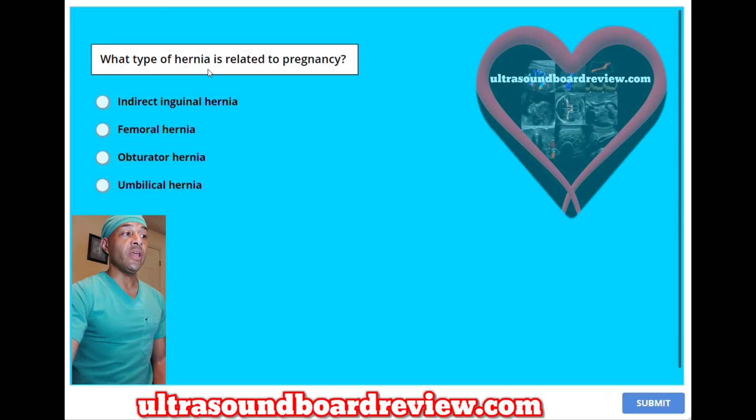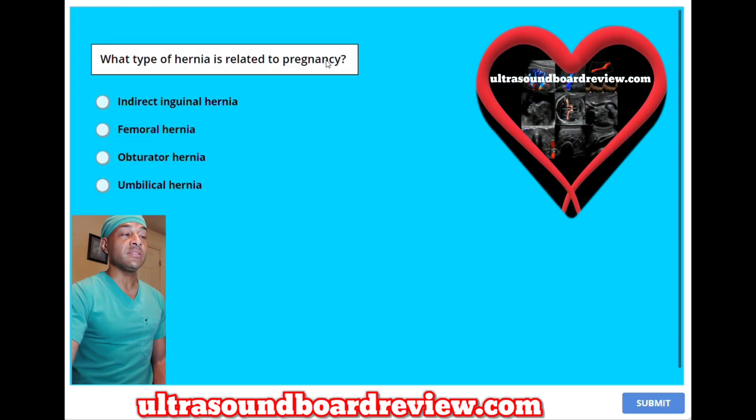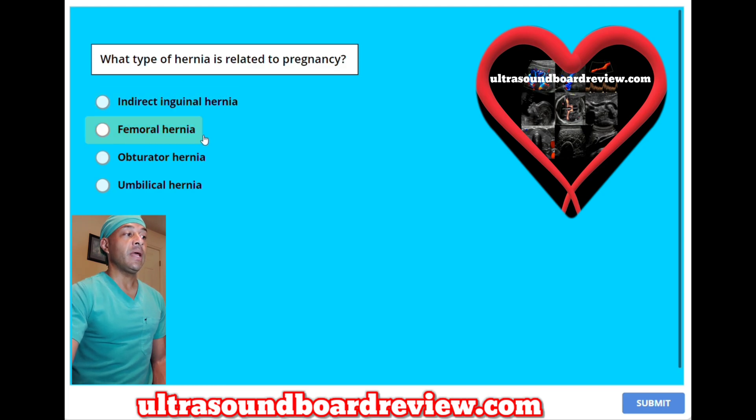Which type of hernia is related to pregnancy? A. Indirect inguinal hernia. B. Femoral hernia.